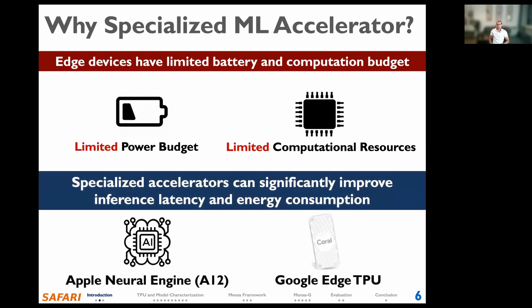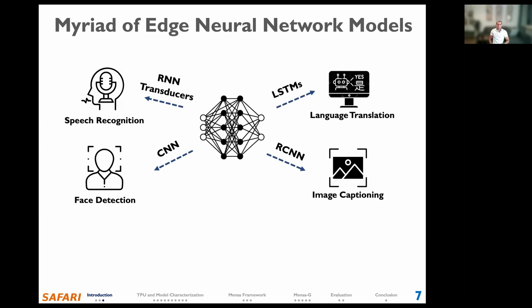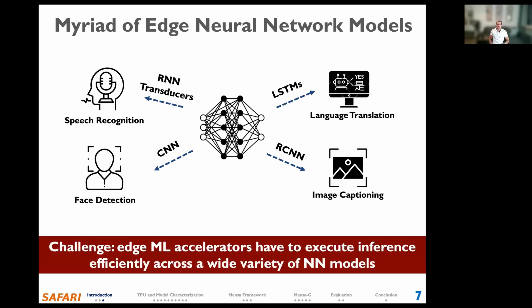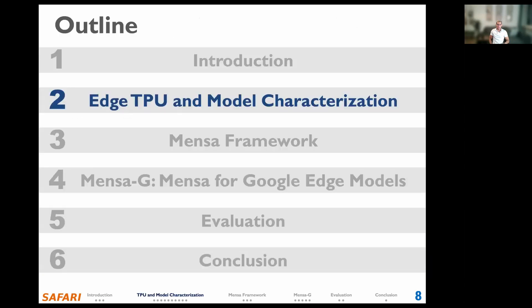Thus, industry has started looking at specialized accelerators designed for edge devices to improve inference performance and energy consumption. At the same time, neural networks are evolving rapidly, leading to all sorts of different models each targeting different applications. The major challenge is to design an edge accelerator that can efficiently execute inference across a wide variety of neural network models. Next, I will describe our analysis of various neural network models running on the Google Edge TPU accelerator.